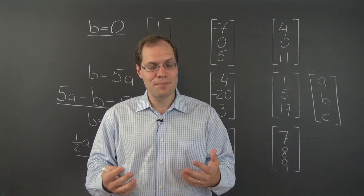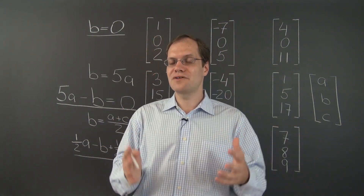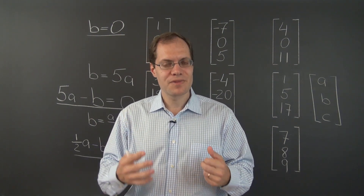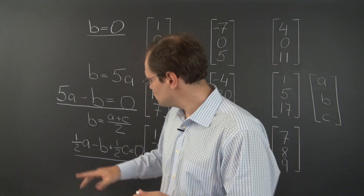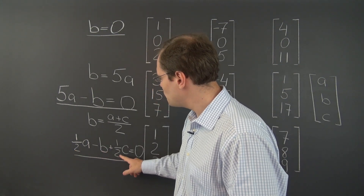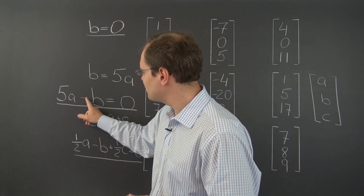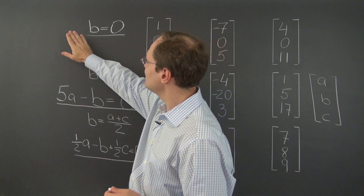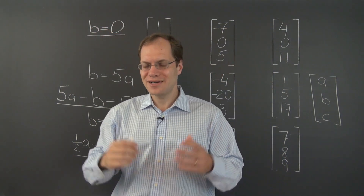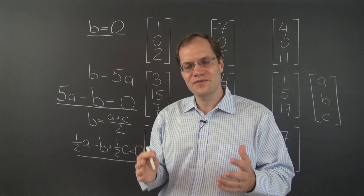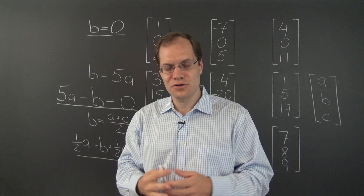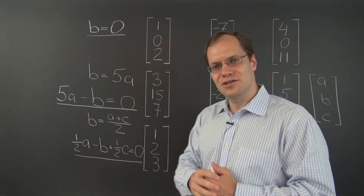Every property — equivalently, any subspace — can be characterized by just a triplet of coefficients: (1/2, −1, 1/2), or (5, −1, 0), or (0, 1, 0), such that the linear combination of coefficients involving those numbers equals zero.